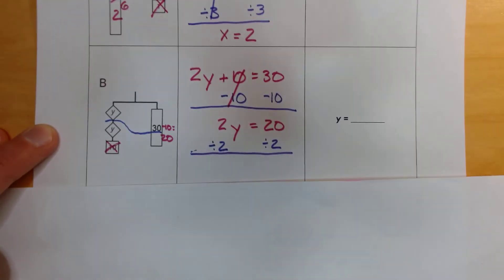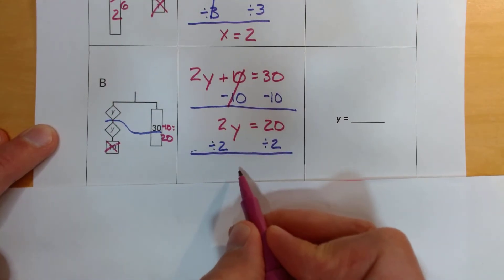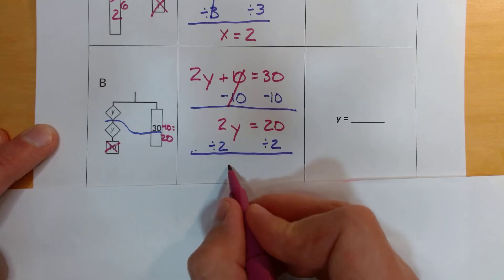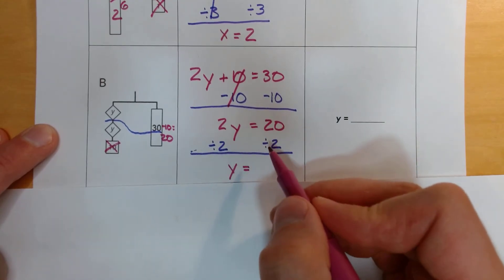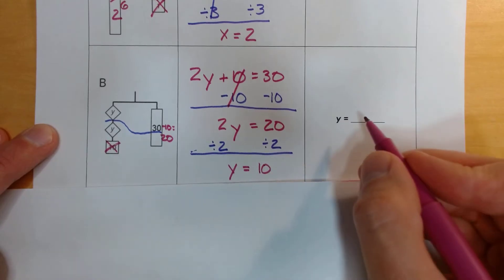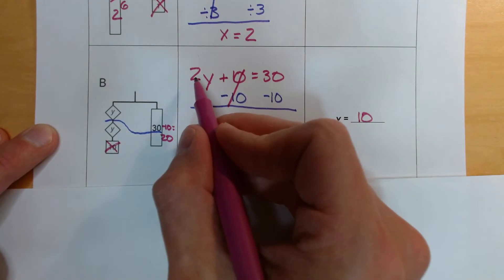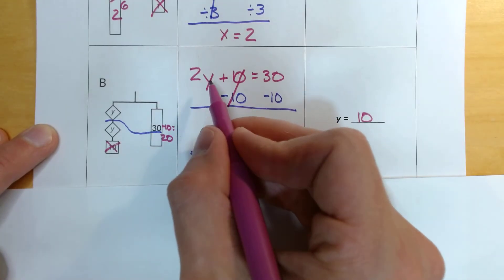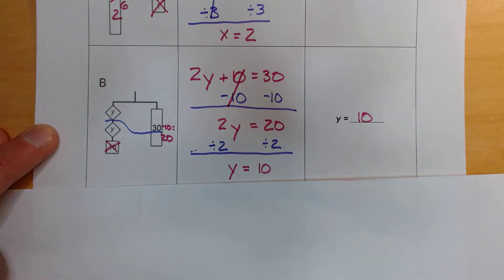Now, 2 divided by 2 makes 1. 1y. Again, you don't have to write the 1 in front of the y. It's assumed that when you see a single variable, that means 1y. 20 divided by 2 makes 10. Our solution is y equals 10. Let's check ourselves if I put 10 back into our equation. 2 times 10 is 20, plus 10 is 30.